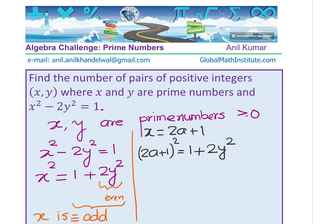If I expand using a² + 2ab + b², we get 4a² + 4a + 1, and that should be equal to 1 + 2y².